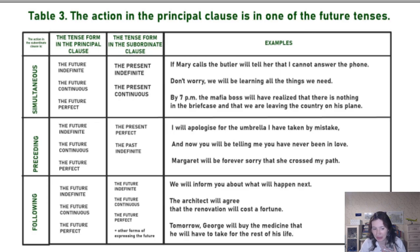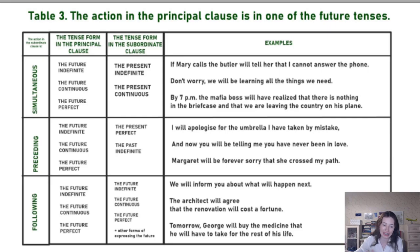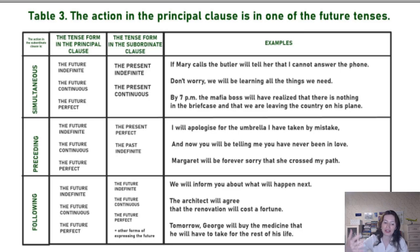At this moment right now you didn't even take anybody's umbrella — it's still not happening, it's all a theoretical construction in the future. Another example: 'And now you will be telling me you have never been in love.' You will be telling me in the future about something which has been happening earlier. 'Margaret will be forever sorry that she crossed my path.'